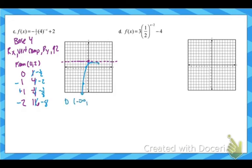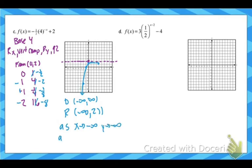Domain is negative infinity to infinity. Range is negative infinity to that asymptote at 2. End behavior: as x approaches negative infinity, y is getting smaller; as x gets bigger, y is approaching 2.